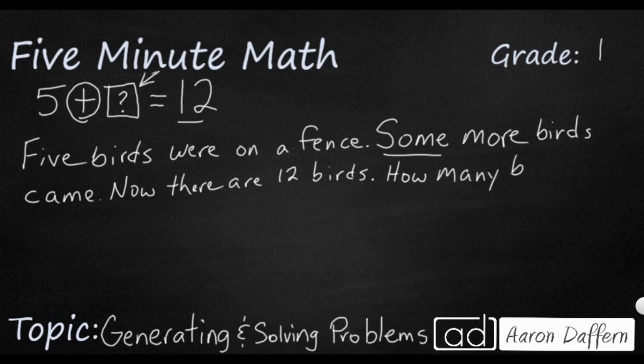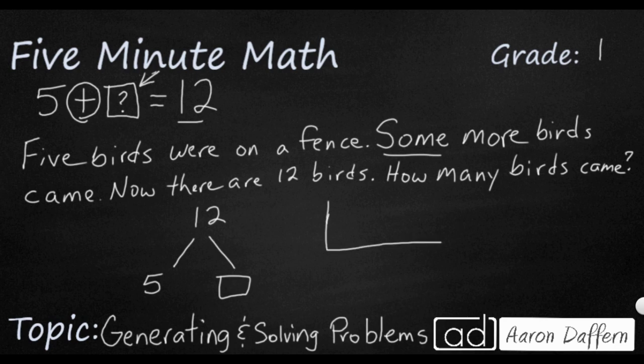And now we have set up our start, our change, and our result. And it's this change that we don't know. So we can do it like this. We can say 12. And that's 5 and I don't know. Or if you want, we can kind of look at it like this. Part, part, whole. We can say there's a total of 12. And it's 5 and that missing number. So we've got a few different options here.